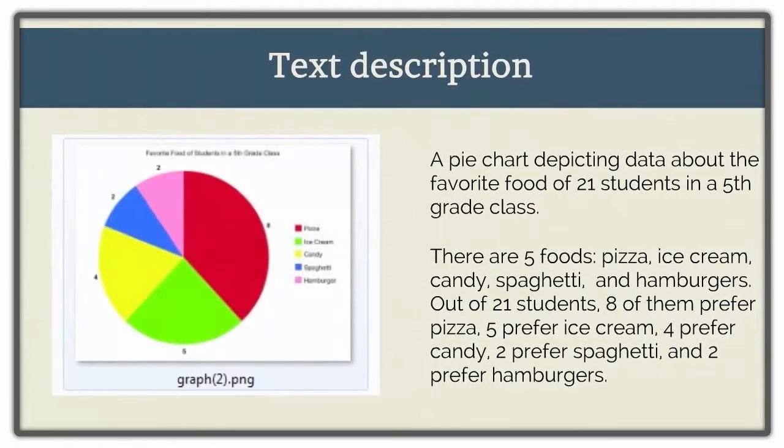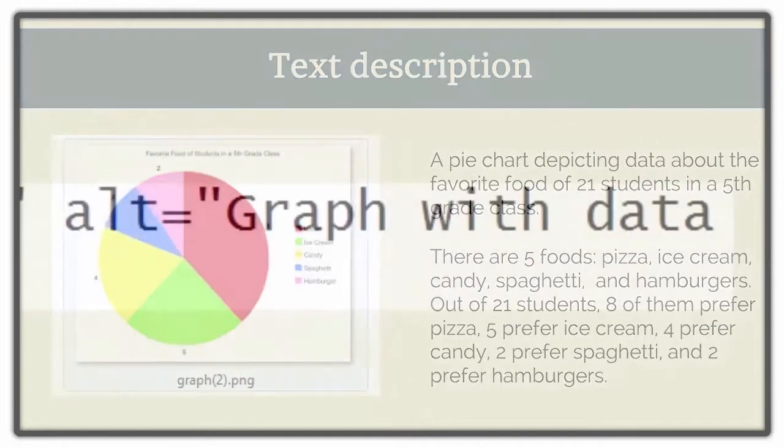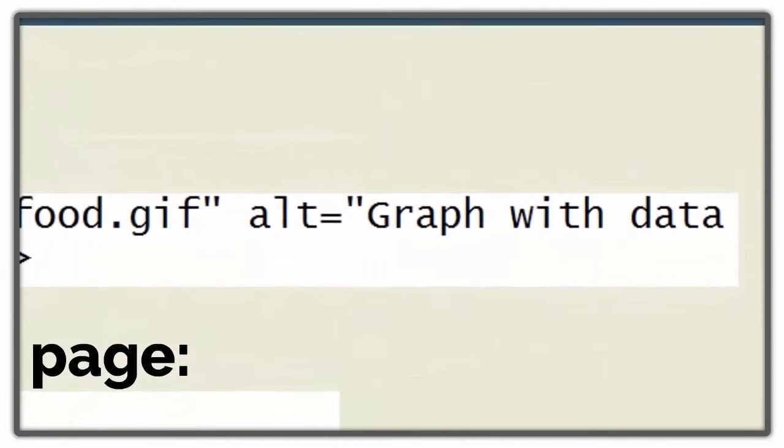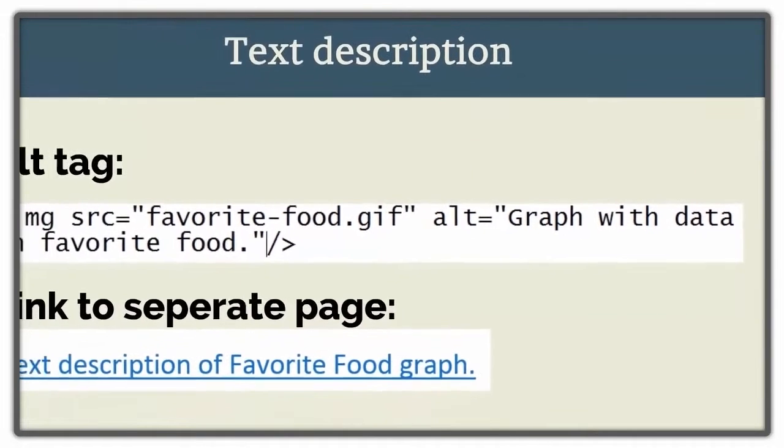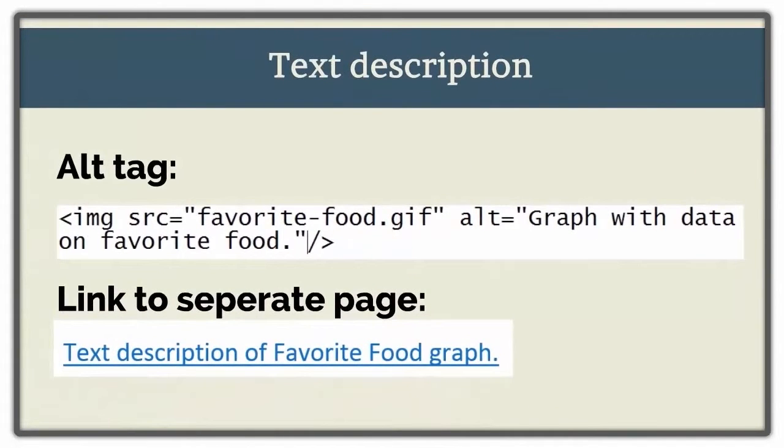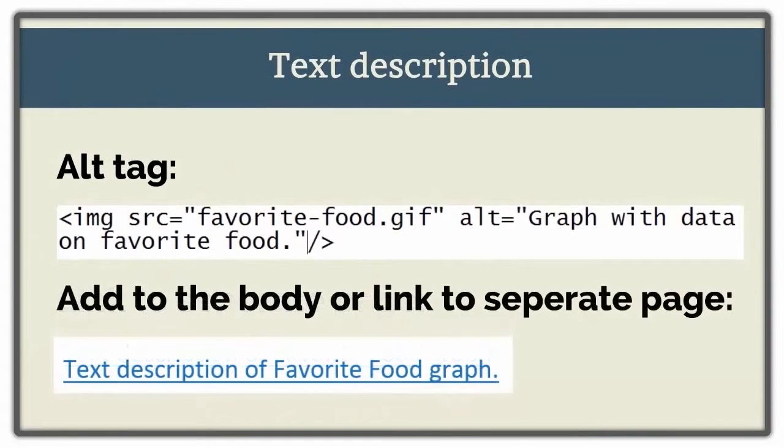One way to make this data more accessible to screen reader users is to write a long text description for graphs, charts, and maps. These descriptions are often too long to add to the alt tag of an image, which is the alt attribute in the image section of the HTML code. If your description is too long, then you can also add it to the body of a corresponding article or in a linked separate page.